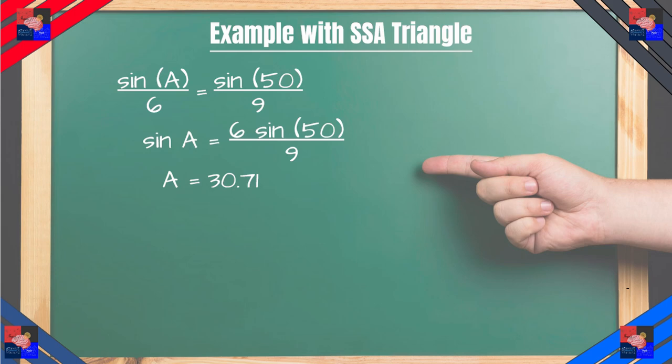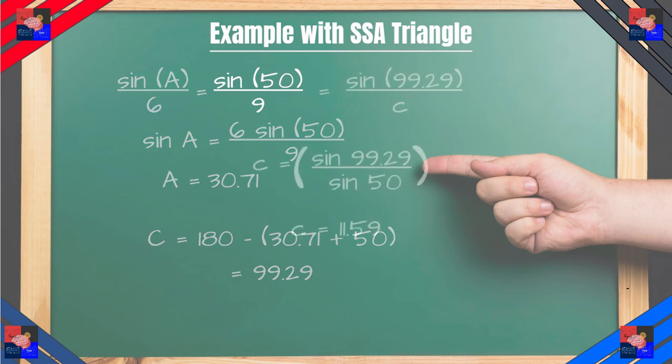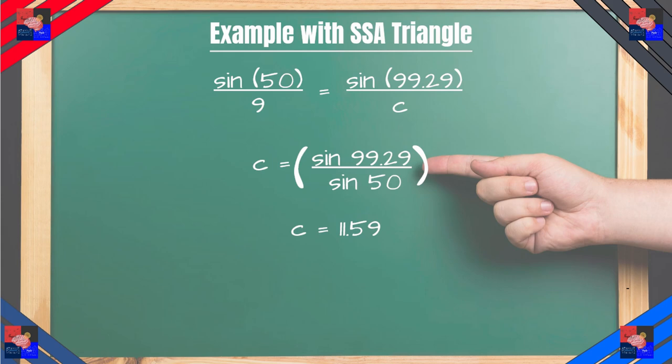So we put the 6 on the right. And then we find the inverse sine and we get 30.71 degrees. And using again all angles add up to 180 degrees we get 99.29 degrees. Right around that. Now let's plug this in and the only value we don't know is C.